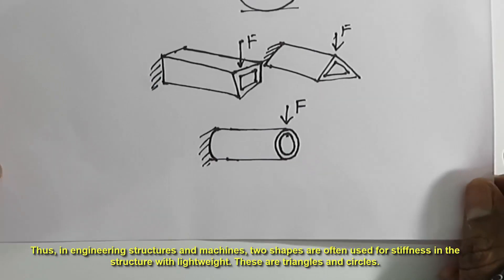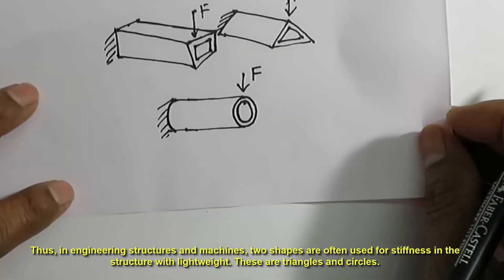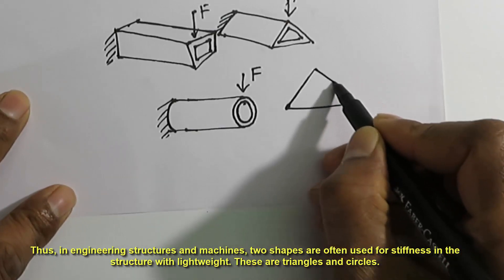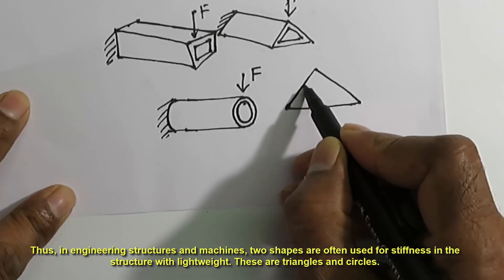Thus, in engineering structures and machines, two shapes are often used for stiffness in the structure with light weight. These are triangles and circles.